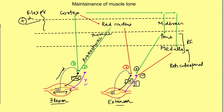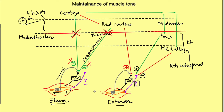Now let's examine the two types of rigidity postures. In decerebrate rigidity, the cortical influence on the alpha motor neuron and the red nucleus influence on the alpha motor neuron are both eliminated. The lesion is below the red nucleus — a mid-collicular lesion — so all influences from the cortex and midbrain are lost. As a result, the excitatory influence to the flexor muscle alpha motor neuron is lost, and what remains active is the influence on the gamma motor neuron coming from the pons and medulla.